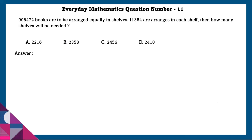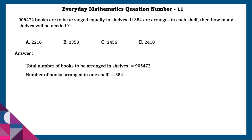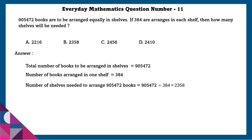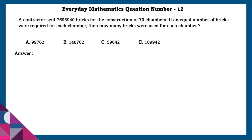Question 11: 9 lakh 5,472 books are to be arranged equally in shelves. If 384 books are arranged in each shelf, then how many shelves will be needed? Total books to be arranged is 9,05,472. Number of books per shelf is 384. Number of shelves needed is equal to 2,358.